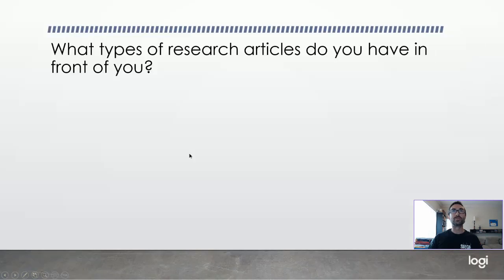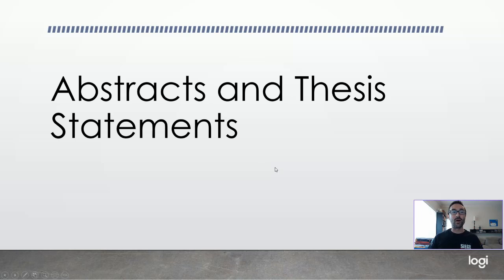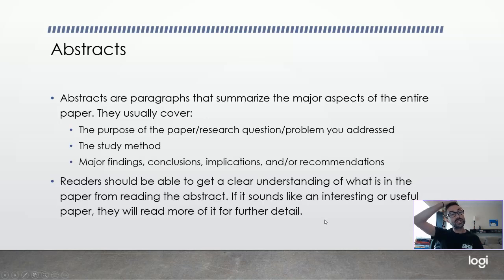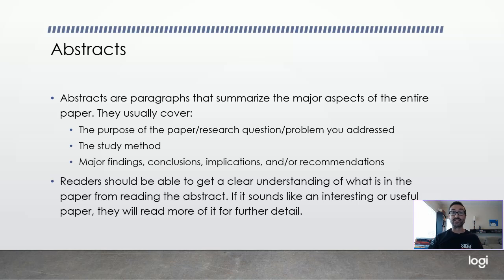Now we've gone over some types of journal articles. Every single journal article that you read has an abstract, and many academic book chapters have these too. They are at the very beginning. Abstracts are paragraphs that summarize the major aspects of the entire paper. They usually cover the purpose of the paper, provide a little context about the research question or problem, mention the study method, major findings, conclusions, implications, and recommendations. Readers should be able to get a clear understanding of what is in the paper from reading the abstract. If it sounds interesting, the reader will download the paper and read more for further detail.